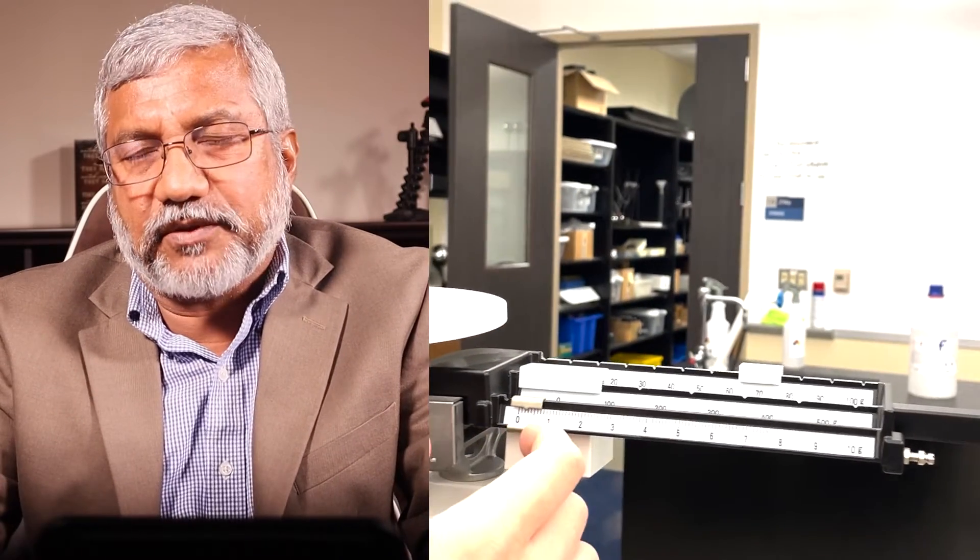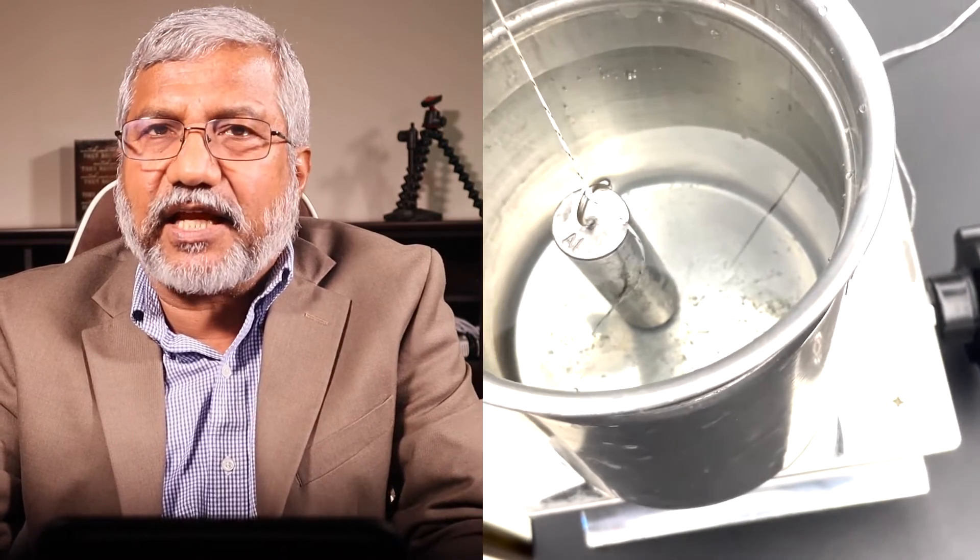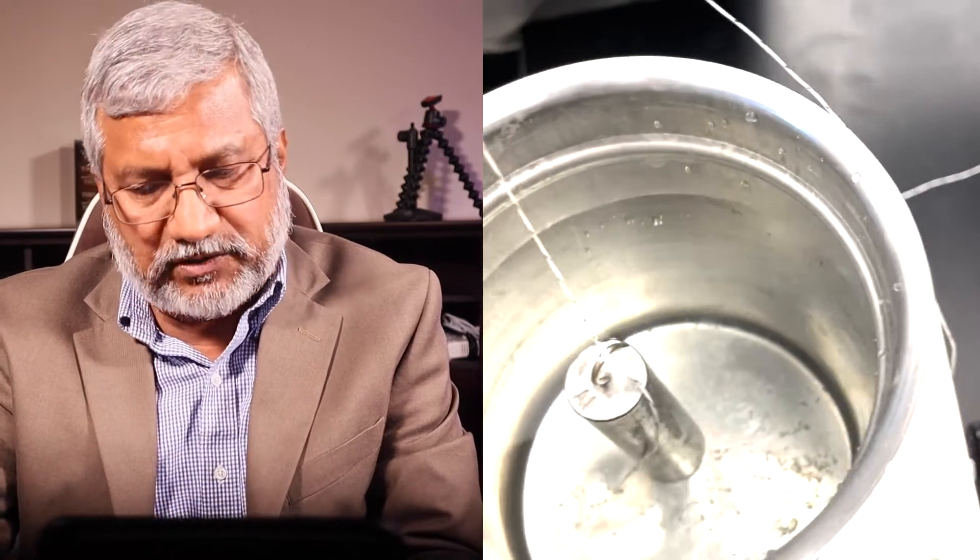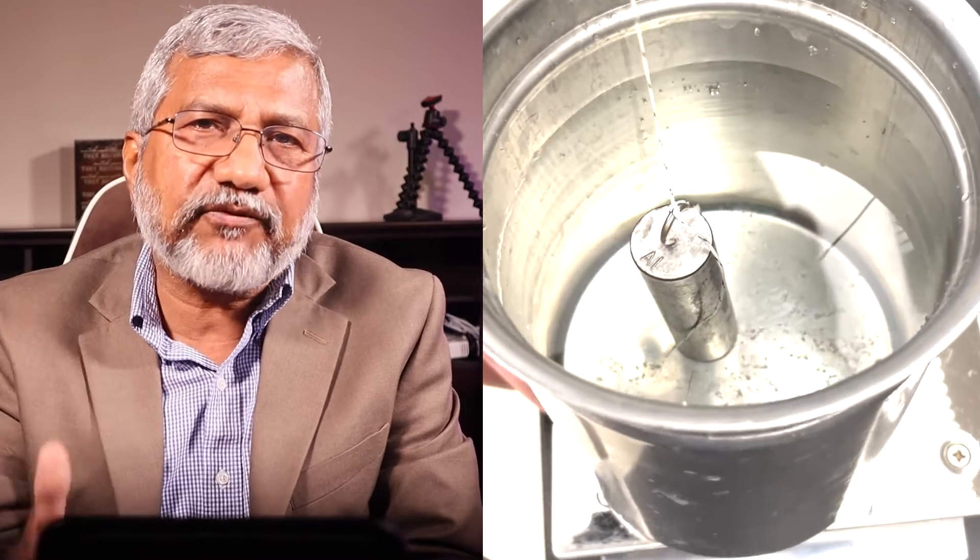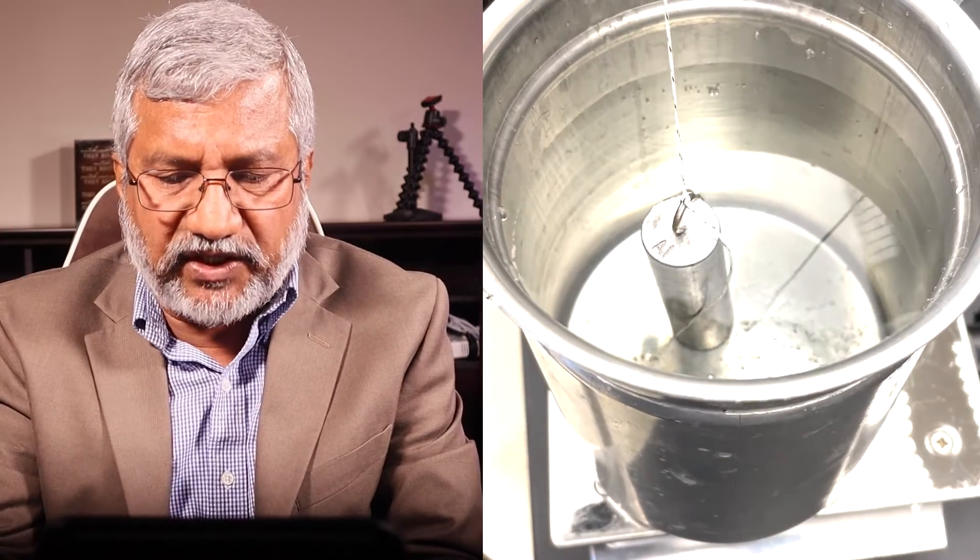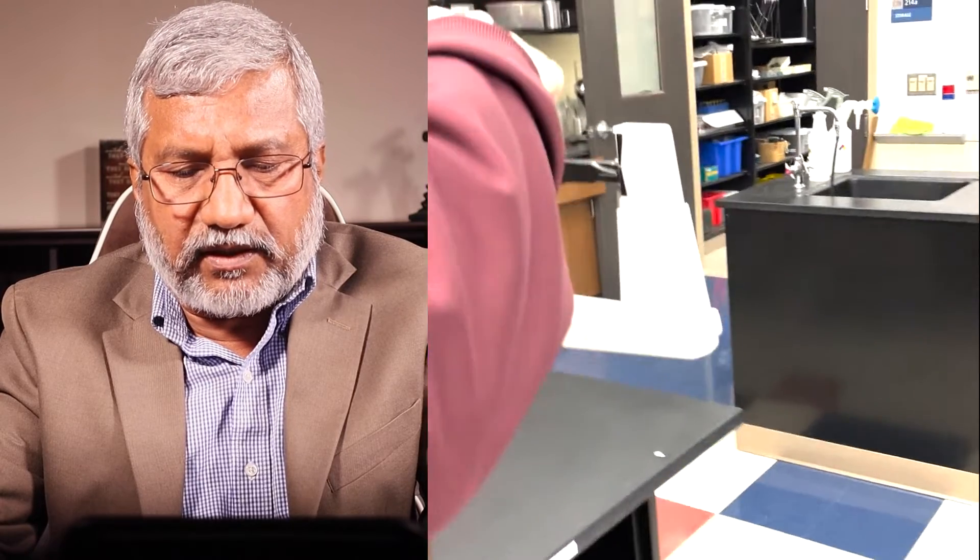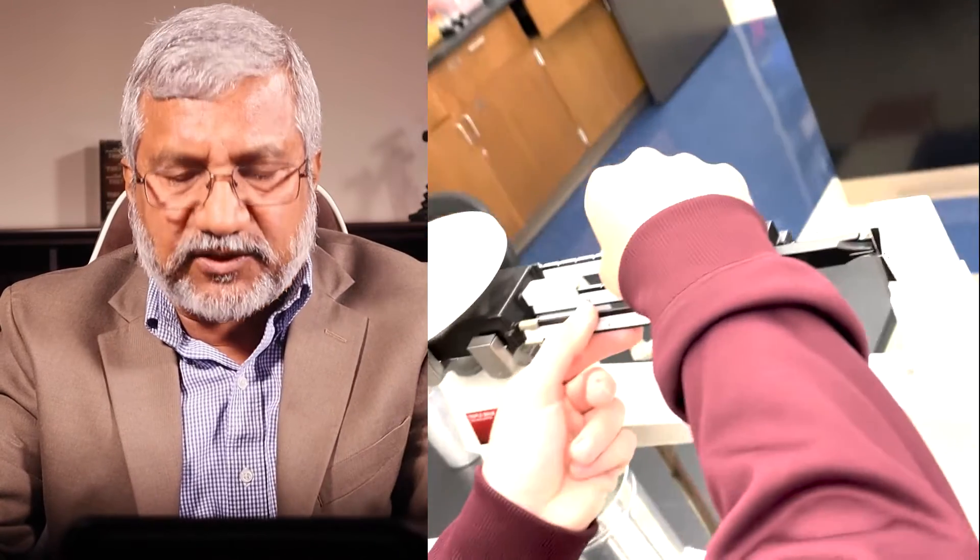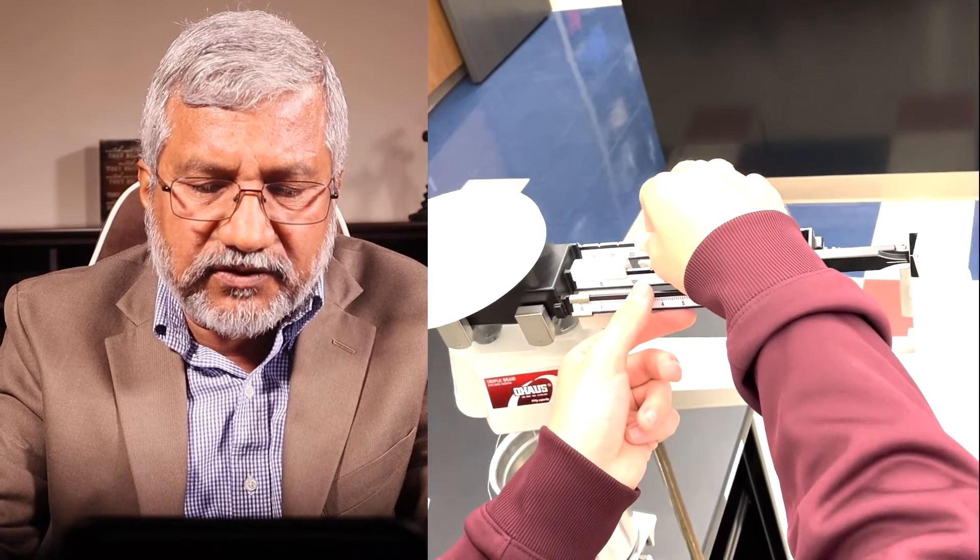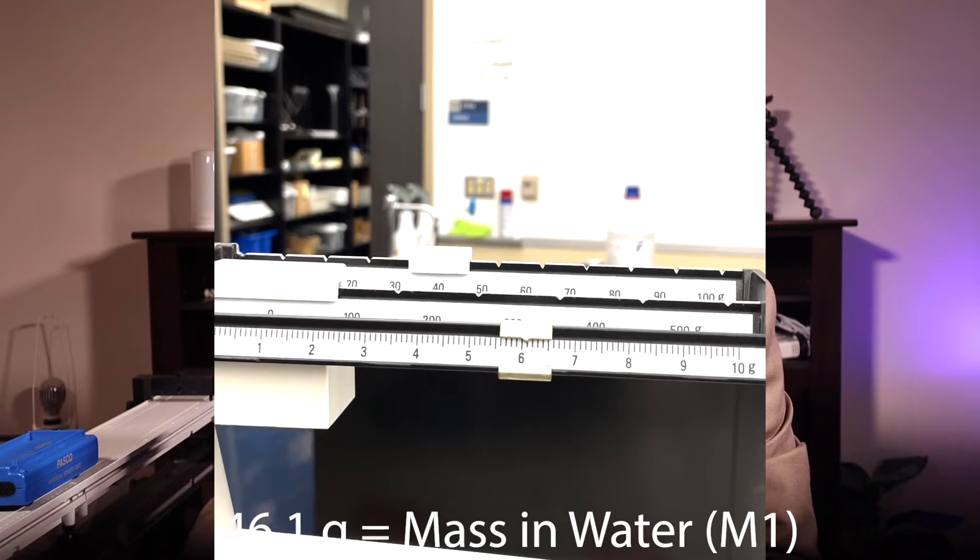Now the aluminum cylinder is completely immersed in water, taking care that it's not touching anywhere—not at the bottom, not at the sides. It's completely immersed in water so it's definitely going to weigh a little less. Its mass is going to be a little less, so let's find that out. The student is trying to find its mass while it's in water and it's 46.1 grams. We got it, so that's the mass in water: 46.1.